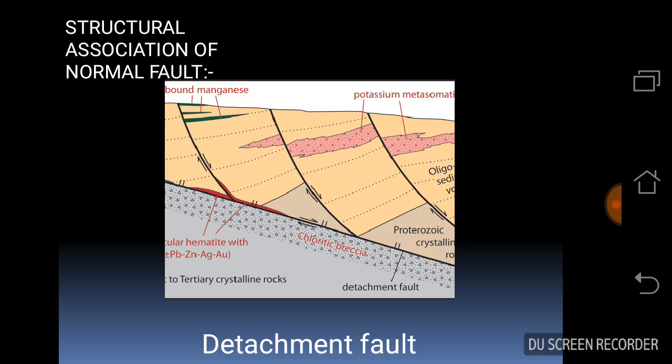Now come to the structural association of faults. The first structural association is detachment fault. Detachment fault is a low-angle fault that makes the major boundary between unfaulted rocks below and hanging wall above.